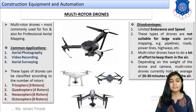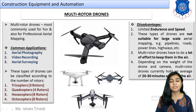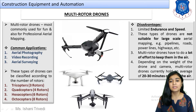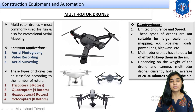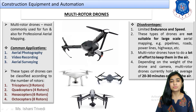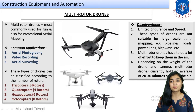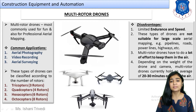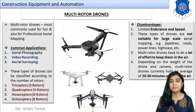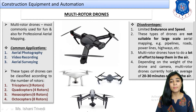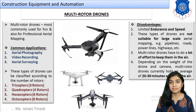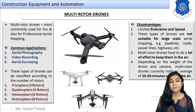Looking at the configurations, at the bottom this one has 2 rotor blades, so 2 pairs of rotor blades. Another has 4 pairs, and again another with 4 pairs. The aerial camera will be mounted on these drones.